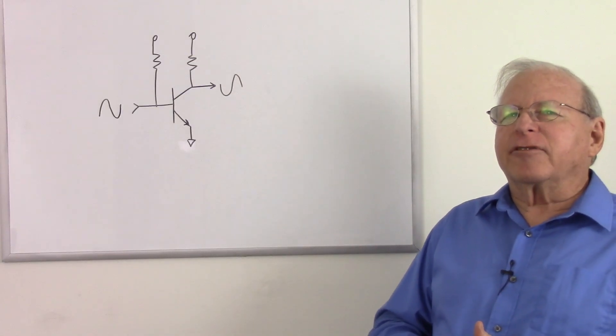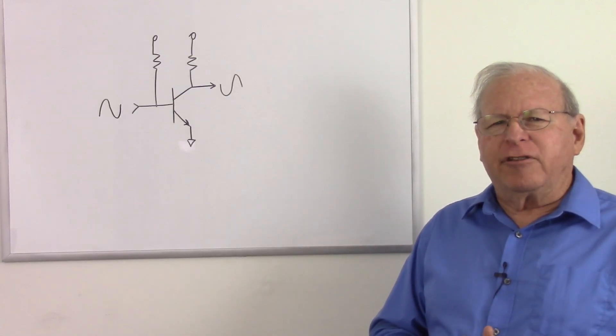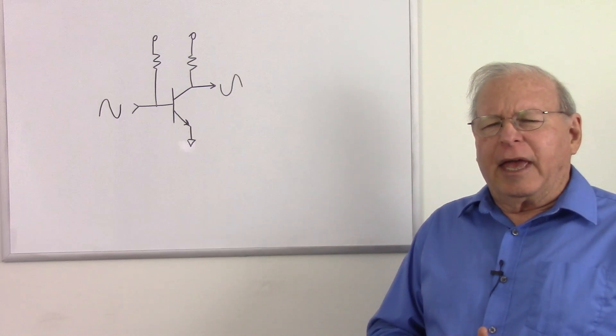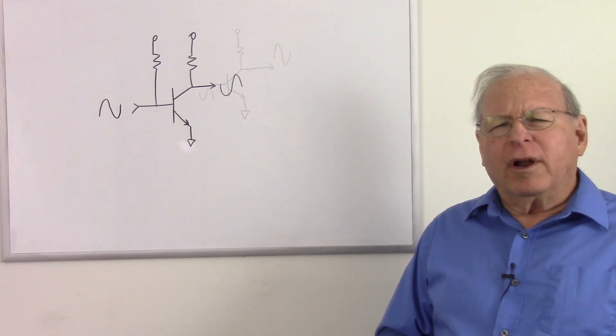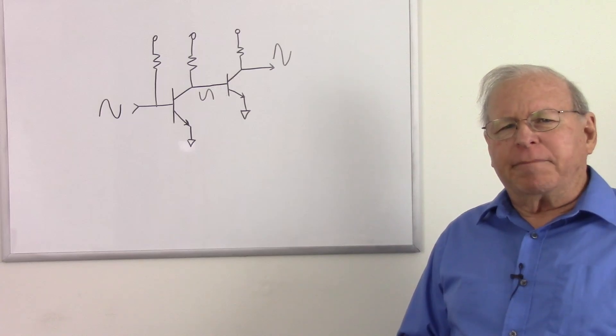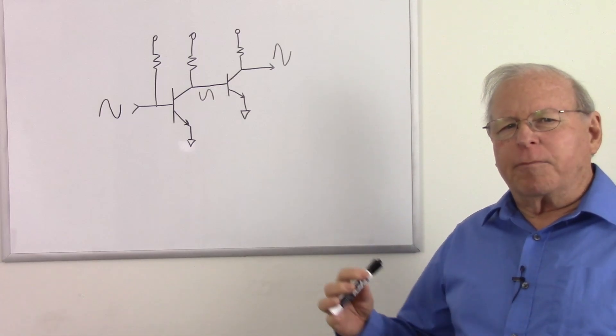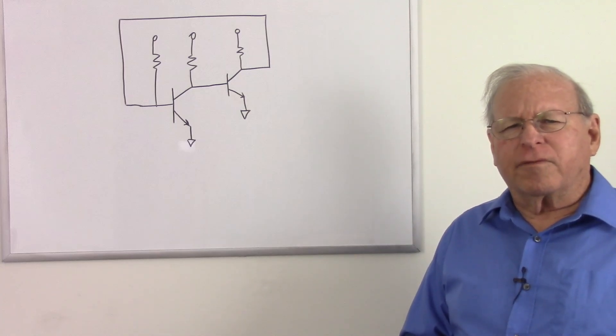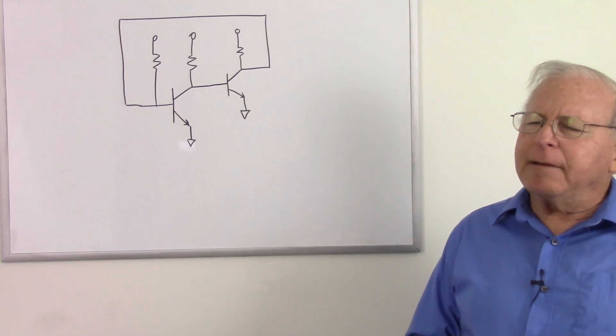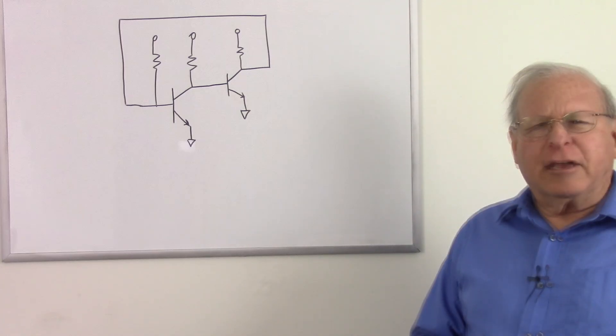Let's see. A common emitter amplifier has a 180-degree phase shift. And so if we feed that back, that's going to be negative feedback. But what if we add another common emitter amplifier and feed the output of the first into that one? Well, that flips the phase again. And so if we feed that back, we have positive feedback. Shouldn't that make an oscillator?